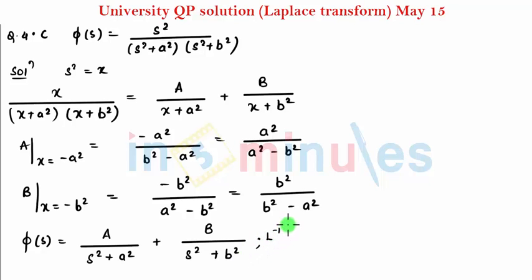After doing inverse of this, L inverse of phi of S will be, since there is A here I need to divide by A, so capital A by small a sin at. The second is the same, capital B by small b sin bt. So we got L inverse of this.